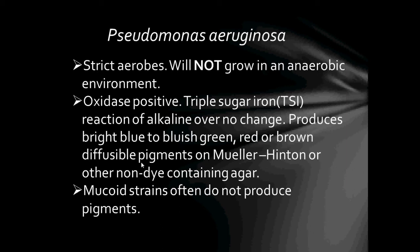Pseudomonas aeruginosa produces bright blue to bluish-green, red, or brown diffusible pigments on Mueller Hinton or other non-dye-containing agar. Mueller Hinton agar is a growth media used to isolate Neisseria and Moraxella species, which are gram-negative diplococci bacteria. Mucoid strains often do not produce pigments.